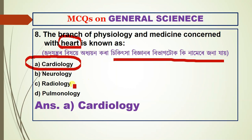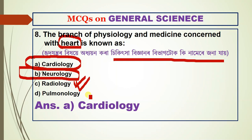Radiology is the branch concerned with X-rays. Neurology is the branch concerned with nerves. Pulmonology is the branch concerned with the lungs. And the branch concerned with the heart is cardiology.